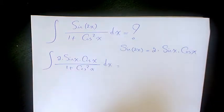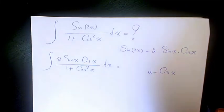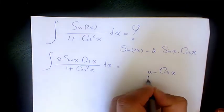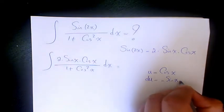Then, I'm going to use substitution method and consider u as cosine x. So, derivative of u is going to be du, and derivative of cosine x is going to be negative sine x dx.